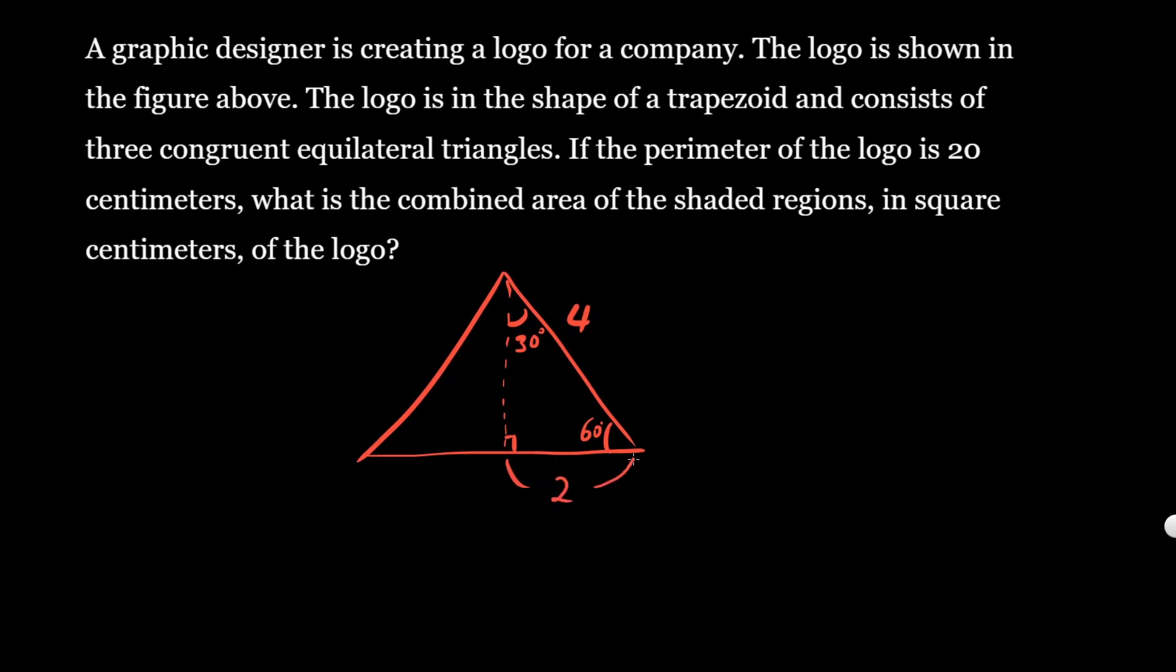Now you should know the 30-60-90 triangle ratio. If you have a 30-60-90 triangle, the shortest leg opposite to 30 degrees is always one or just X, then the hypotenuse of it is always the double that, and then the longer leg is the square root of three times the short leg. In this case, it's radical three.